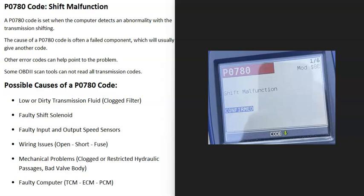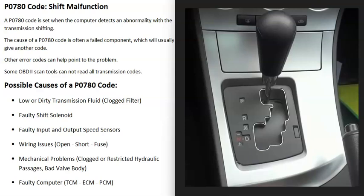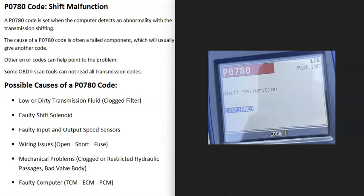Today I'm talking about a P0780 code, what it is and how you go about fixing it. A P0780 code is a shift malfunction. Basically, the computer is picking up that the transmission is not shifting correctly. The computer uses different sensors to know how fast the input shaft and output shaft are moving, the RPMs of the engine, and things like this, to calculate whether the transmission is not shifting right. When it sees this, it sends out a P0780 code.